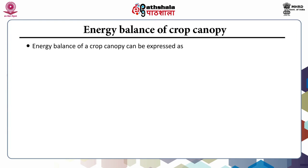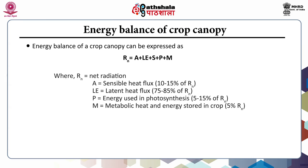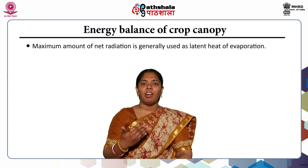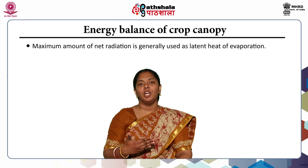The energy balance of crop growth can be expressed as: Rn = A + Le + S + P + M, where Rn is net radiation, A is sensible heat flux (around 10–15% of net radiation), Le is latent heat flux (around 75–85%), P is energy used in photosynthesis (5–15%), and M is metabolic heat and energy stored in the crop (around 5%). The components vary with crop stage, soil moisture condition, and wind speed and direction. The maximum amount of net radiation is generally used as latent heat of evaporation, and net radiation is positive during daytime and negative at night.